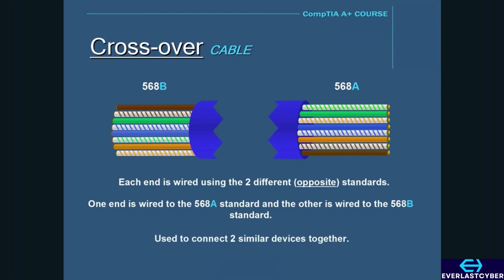Crossover cables are used to connect two similar devices together. For instance, you can use a crossover cable to connect two computers directly to each other without using a hub or switch. Crossover cables are also used to connect hubs or switches to each other.